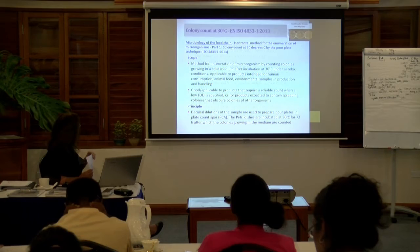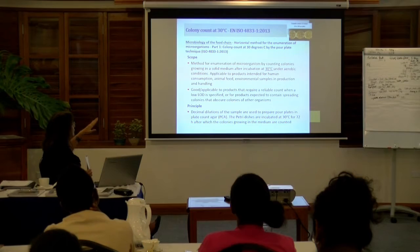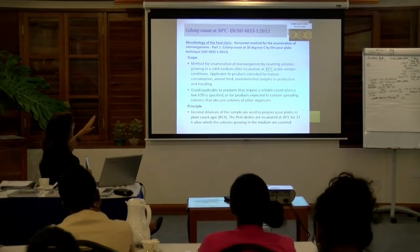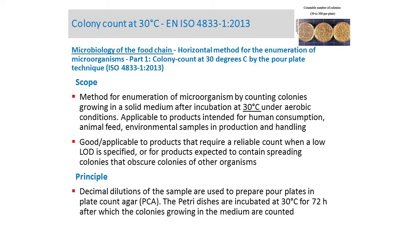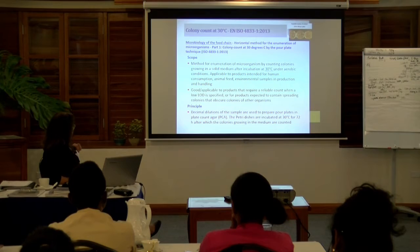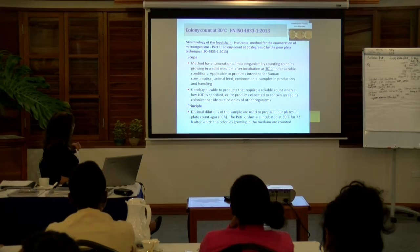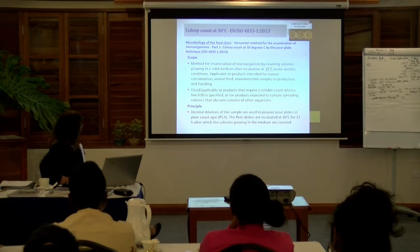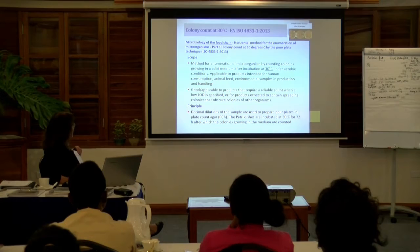The standard is microbiology of the food chain — horizontal method for the enumeration of microorganisms, part one: colony count at 30 degrees Celsius by the pour plate technique. It's applicable to products intended for human consumption, animal feed, and also environmental samples in production and handling areas, so it can also be used for swabbing. It has good application to products that require reliable counts when low detection limits are specified. You do dilutions on the samples, prepare pour plates on plate count agar, incubate, and after 72 hours the colonies are counted.